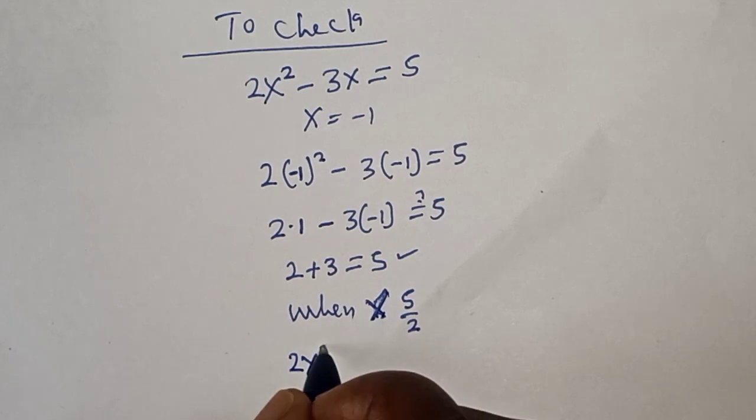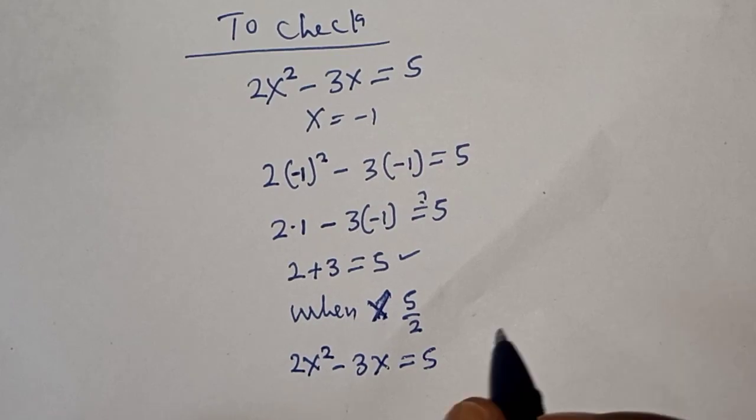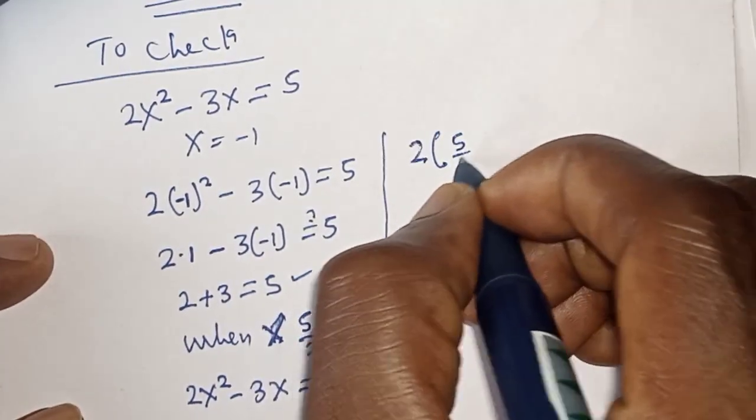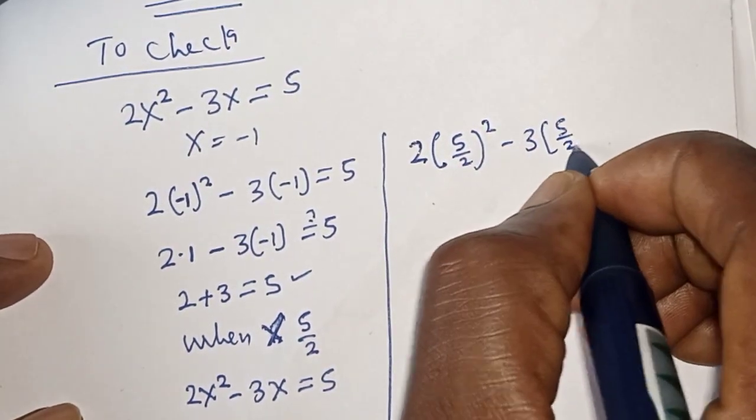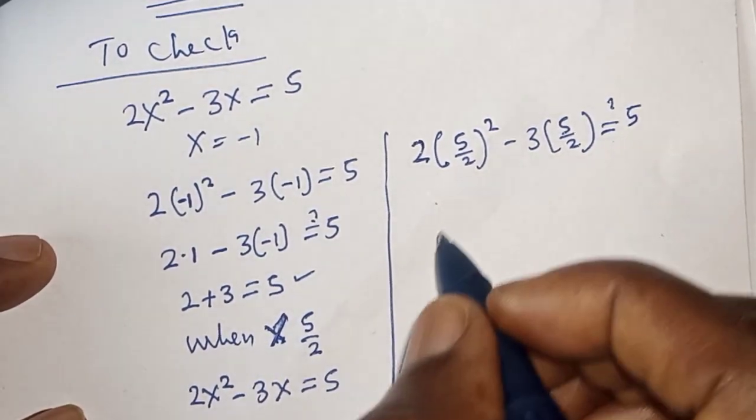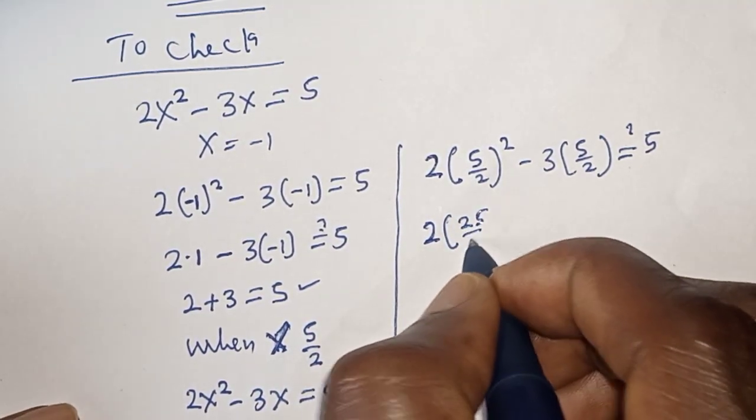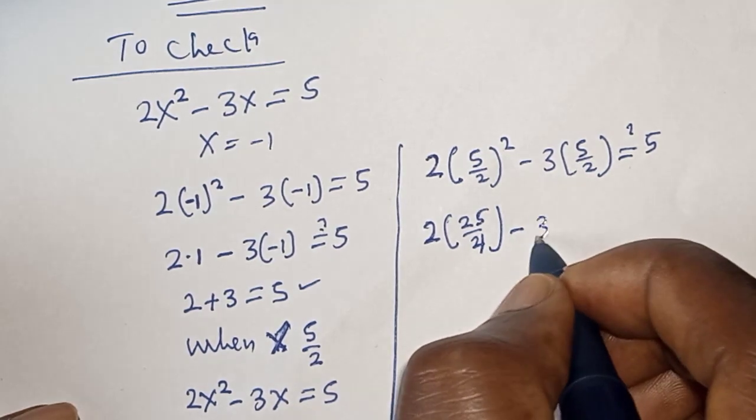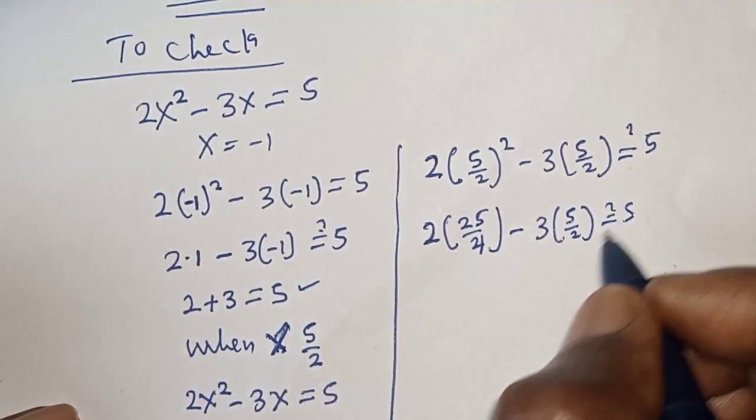Let's check when x = 5/2. We have 2x² - 3x = 5, so 2(5/2)² - 3(5/2) = 5. This is 2(25/4) - 3(5/2) = 5.